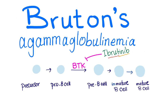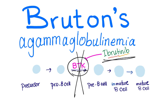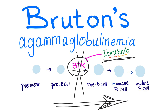Regarding Bruton's tyrosine kinase: in normal B-cell development, we have precursor cells → pro-B cells → pre-B cells → immature B cells → mature B cells → plasma cells, which secrete antibodies. There is an enzyme called Bruton's tyrosine kinase at this stage. The drug ibrutinib inhibits this enzyme, so cancer cells cannot grow, resulting in less cancer. Anything ending in '-tinib' is a tyrosine kinase inhibitor — and 'Ibru-' refers to Bruton's.